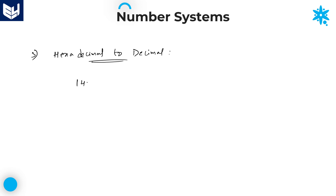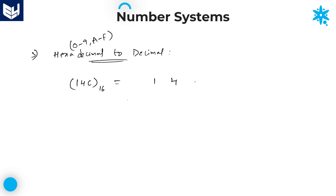Let us take one small example for hexadecimal: 14C base 16. Base 16 indicates hexadecimal, because the hexadecimal number system consists of 16 numbers — 0 to 9, and then A to F, total 16. The place value starts with 16 power 0, 16 power 1, 16 power 2.